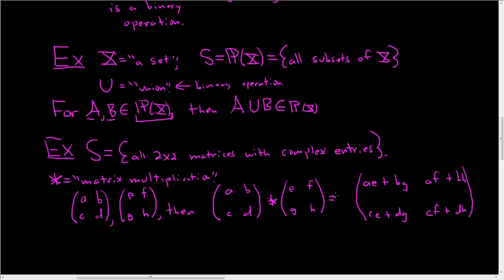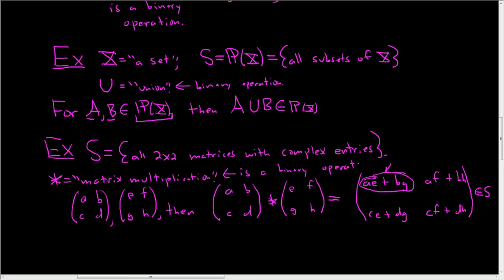This is indeed a binary operation on S. Why? Well, A and E are complex numbers; when we multiply them we get another complex number. Likewise, BG is a complex number, and the sum of complex numbers is also a complex number. So each entry is a complex number, meaning the result is a 2×2 matrix with complex entries — an element of S. So matrix multiplication is a binary operation on S.